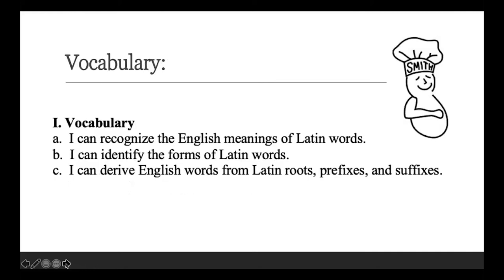Vocabulary is my first objective. I've broken it down into three main areas, and I'll give you ideas about how I use them to help kids think about how they're acquiring vocabulary and what they need to work on. Cambridge cycles vocabulary back again and again, so if you're worried they won't get a word the first time, it will definitely show up in later stories. I separate vocabulary into meanings of words, forms of Latin words, and derivatives.